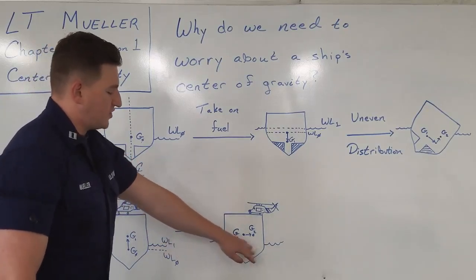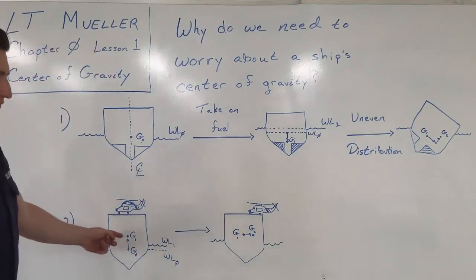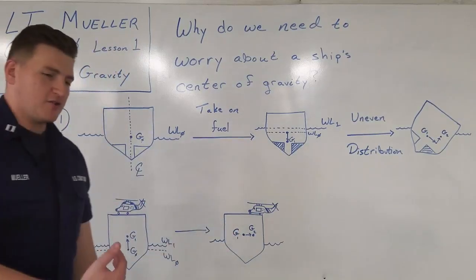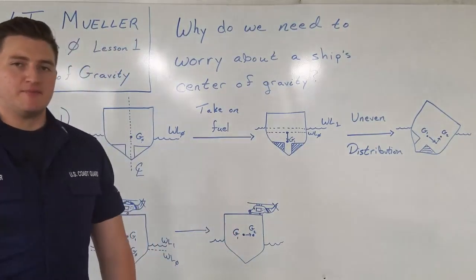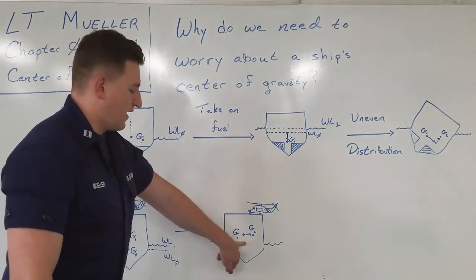Now if we shift that helicopter over to one side of the flight deck, the center of gravity is going to follow that shift. So we have G1, which is here, which follows from the addition of the helicopter, it's going to shift over to G2. And how much or how far it shifts is going to depend on the moments that occur from the helicopter and from the ship itself.